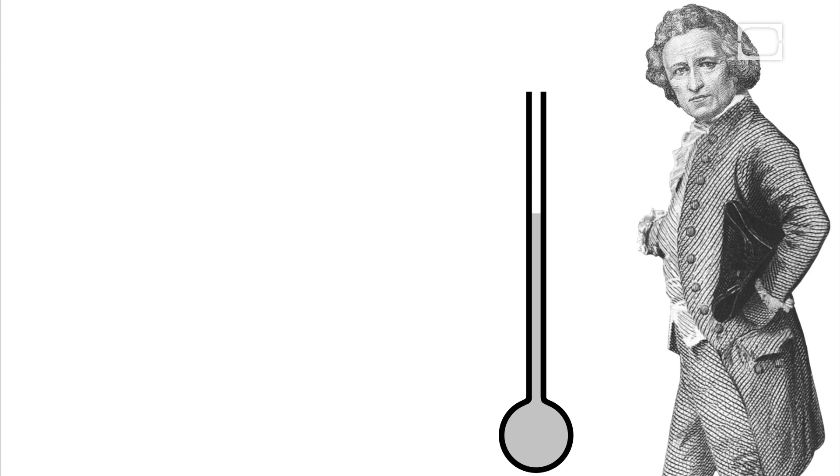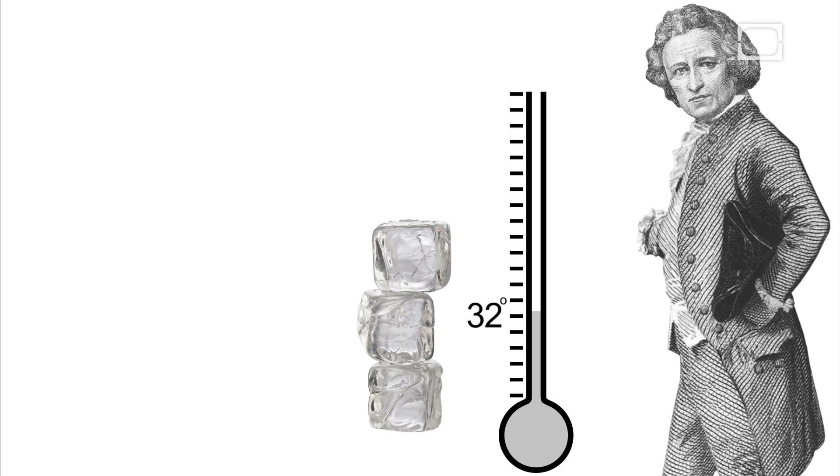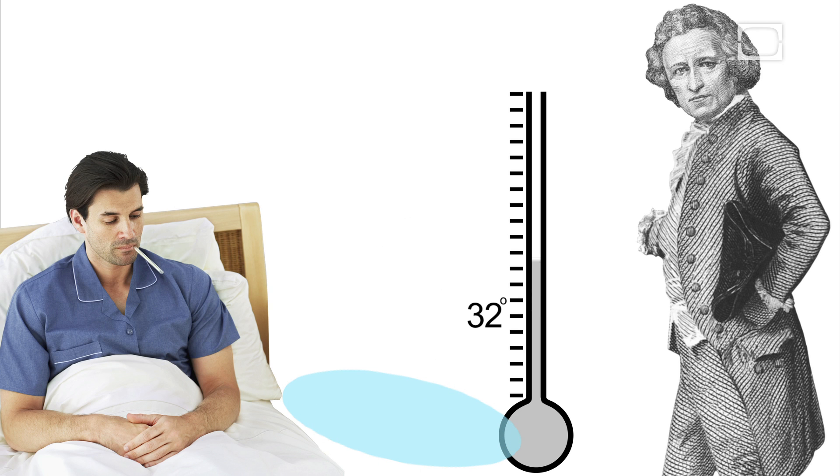Yet this wasn't his biggest stroke of genius. In 1724, Daniel proposed a scale for measuring temperature, setting 32 degrees as the temperature of ice melting in water, and the temperature of the human body at 96 degrees.